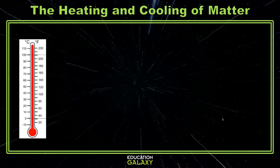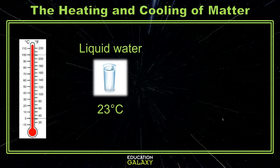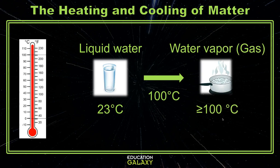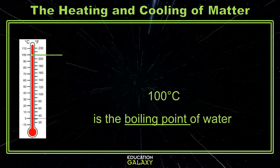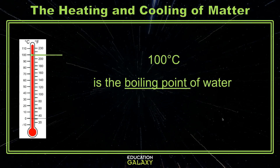Let's look at another example. In this case, we'll heat up some water that was at room temperature, or about 23 degrees Celsius. We'll do this by boiling it on a stove. Just as the temperature of the water reaches 100 degrees Celsius, the water will begin to boil, and will change from a liquid into a gas called steam. As long as the temperature is equal to or greater than 100 degrees, the water will continue to change into steam. 100 degrees Celsius is another special temperature — it is known as the boiling point of water.